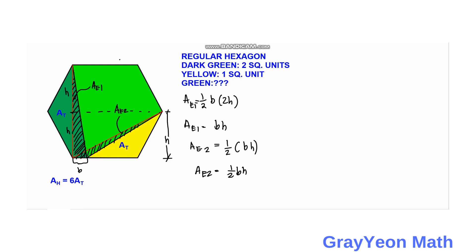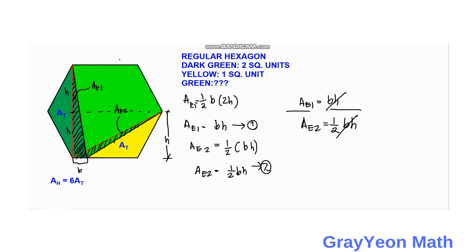Comparing these two triangles in terms of area: area E1 equals Bh, and area E2 equals one half Bh. Dividing E1 by E2 gives Bh divided by one half Bh, which simplifies to 2. Therefore, area E1 is equal to 2 times area E2.